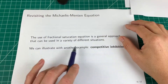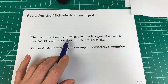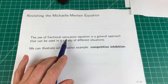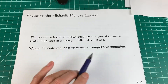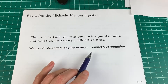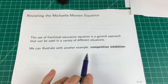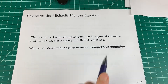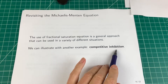So it's quite a general approach, the use of fractional saturations. It can be used in some very complex situations, which I'll present in another video. But let's show a simple example where we can use this to derive the rate expression for a competitive inhibitor.